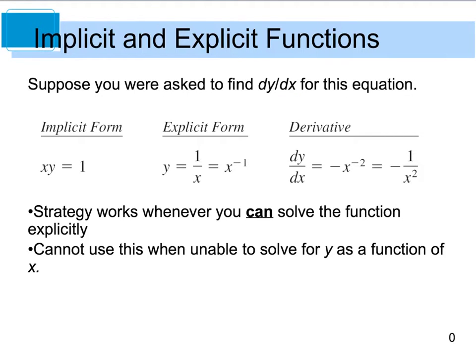Now in this case, if we take that xy equals 1 equation, or the implicit form, we can actually write it in an explicit form by isolating the variable y. So if we do that, then we can go ahead and take the derivative of y with respect to x, or dy/dx, and come up with this right here.